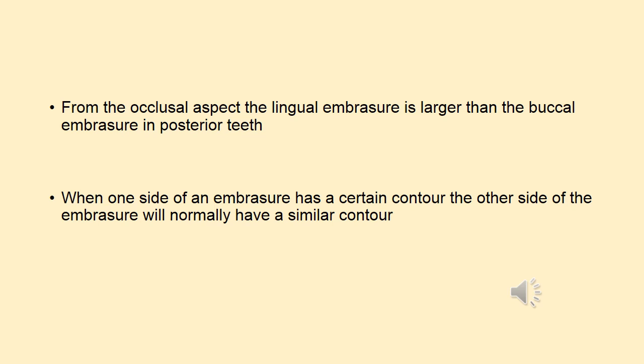The fifth rule is when one side of an embrasure has a certain contour, the other side of the embrasure will normally have a similar contour, meaning both embrasures are going to be of similar shape.